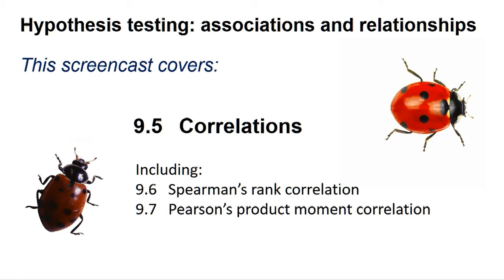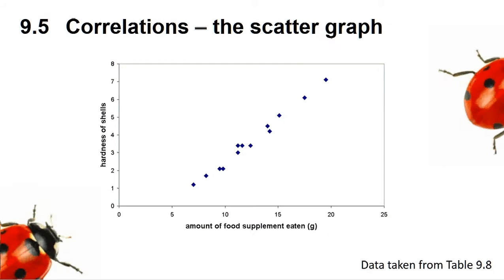Research biologists are always trying to figure out how biological systems function. This path to discovery often starts with an observation that changes in a biological trait may be linked to changes in another trait or an environmental factor. This is often detected by the eye seeing a possible relationship when the data is plotted as a scattergraph.